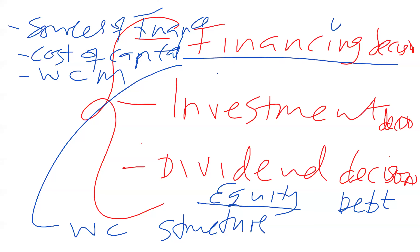Debt has a cost because you have to pay bondholders interest. Under cost of capital, we study the costs of these capital structures. Equity has a cost because you have to give the owners dividends — that is the cost of equity. And you have to pay the bond holders interest — that is the cost of debt. Cost of capital refers to both the cost of equity and the cost of debt.